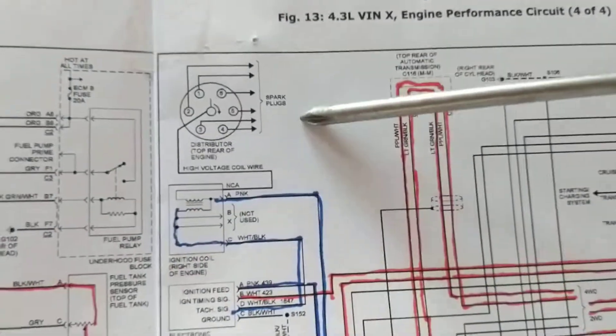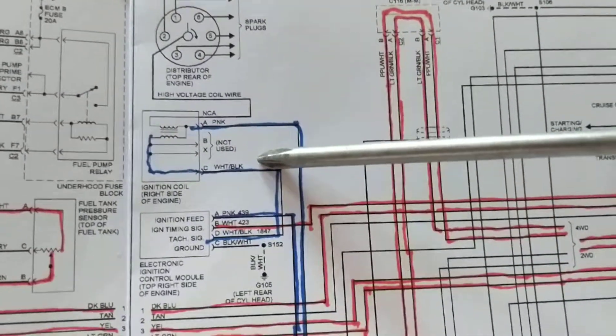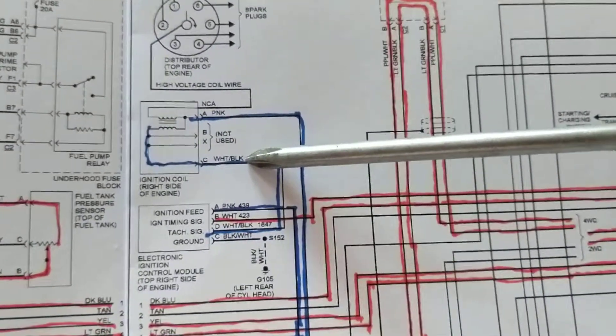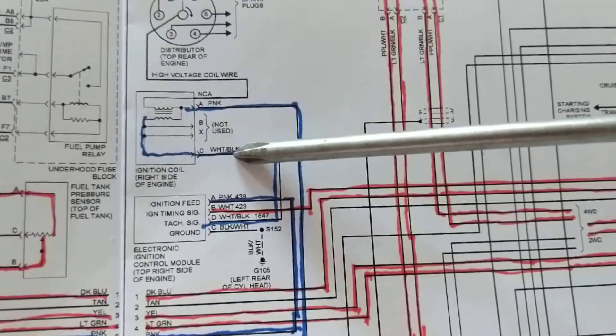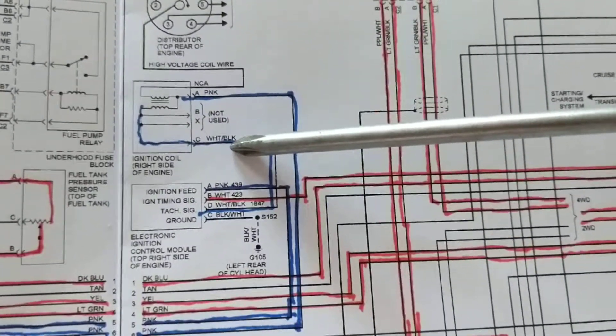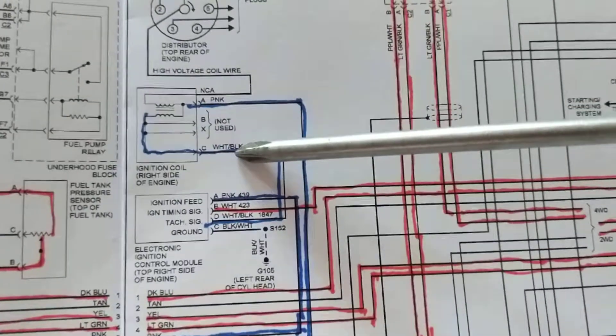When you put the scanner on it, you will get a code - camshaft sensor, crankshaft sensor - meaning you do not get square wave pulses, meaning the engine is not turning.